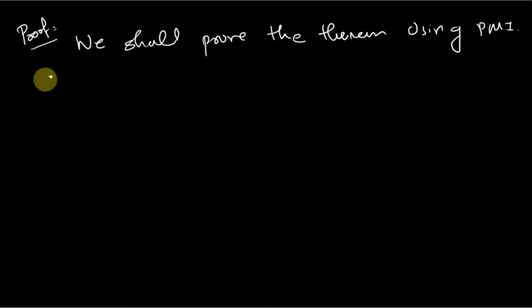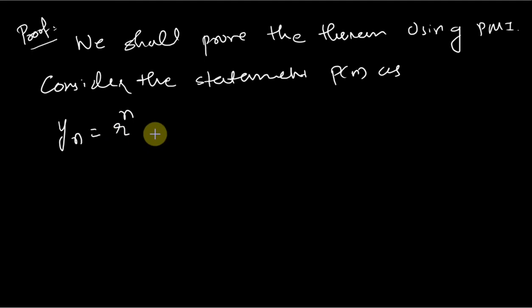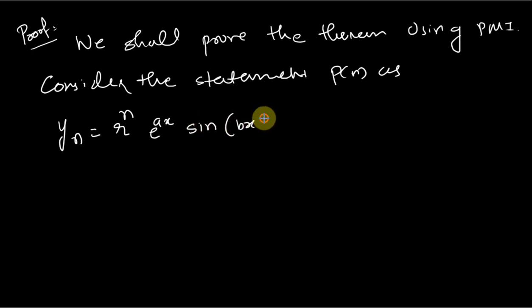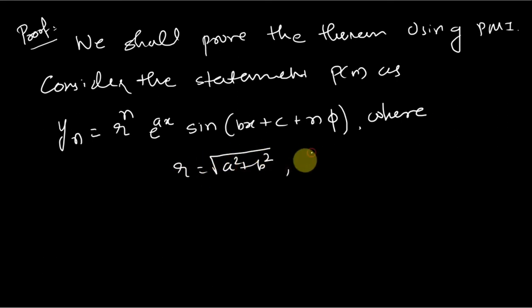Let us consider the statement P(n) as: y_n = r^n · e^(ax) · sin(bx + c + nφ), where r = √(a² + b²) and φ = tan⁻¹(b/a).